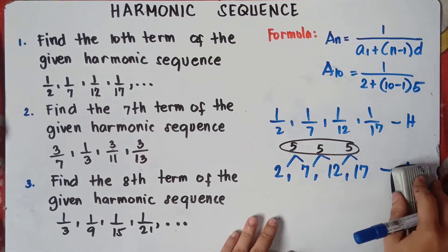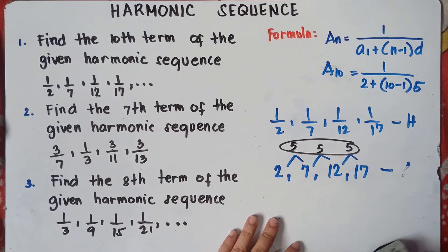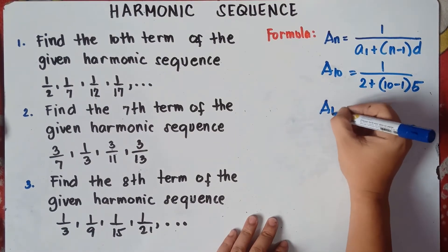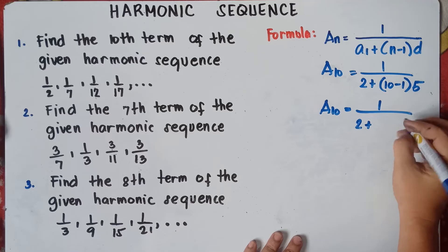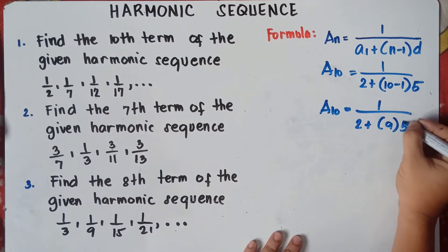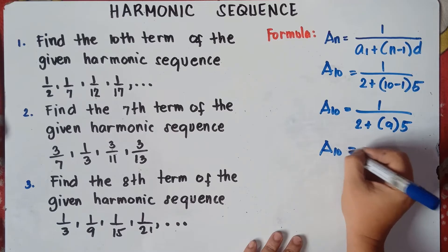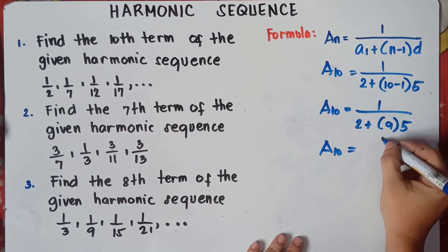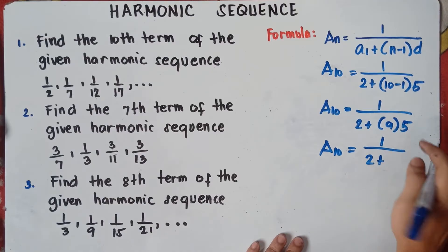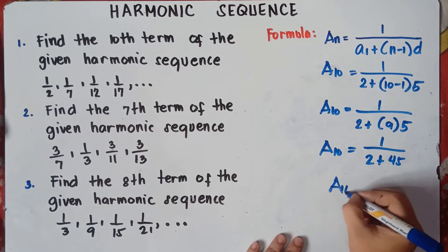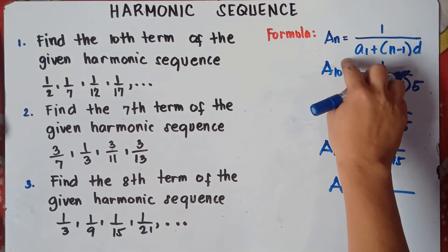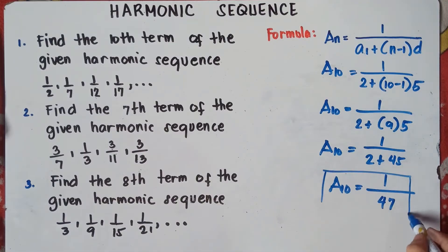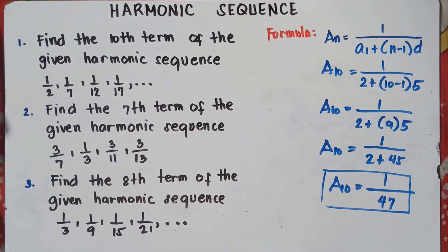We're looking for the 10th term. A sub 10 equals 1 over the first term — use the arithmetic sequence. The first term is 2 plus, n minus 1 times the common difference. We're looking for the 10th term, so 10 minus 1 is 9, times 5. Remember PEMDAS — multiplication comes first: 9 times 5 is 45. So a sub 10 equals 1 over 2 plus 45, that would be 47. Therefore a sub 10 equals 1 over 47. That's the answer for number 1.